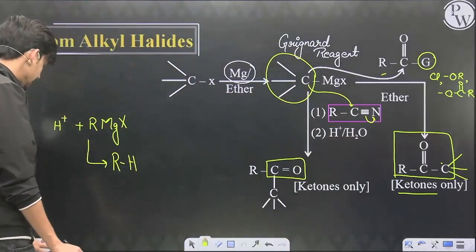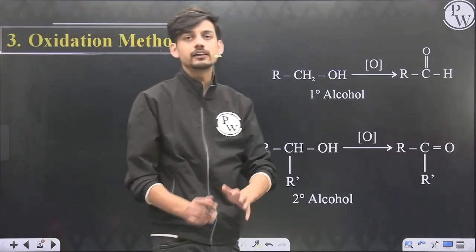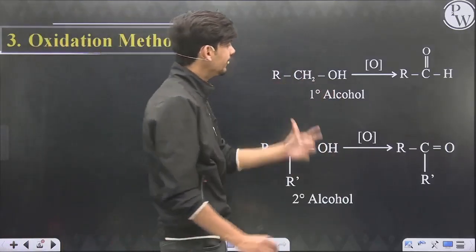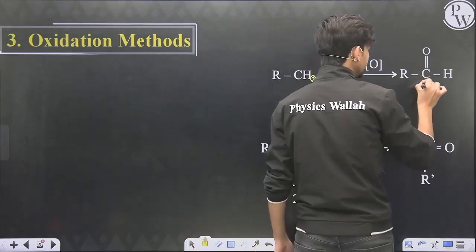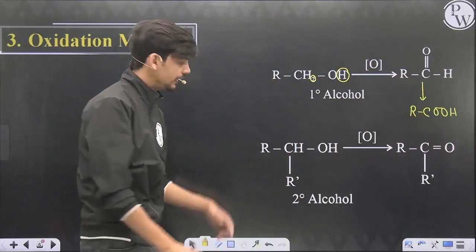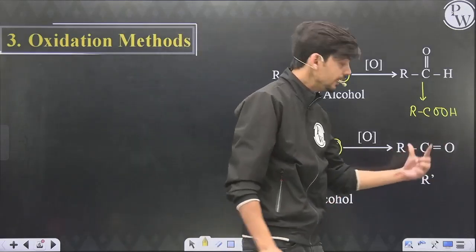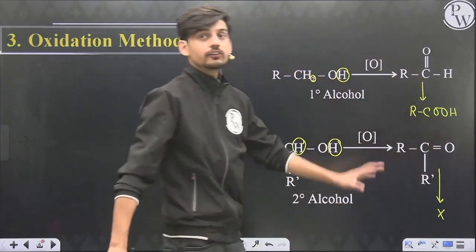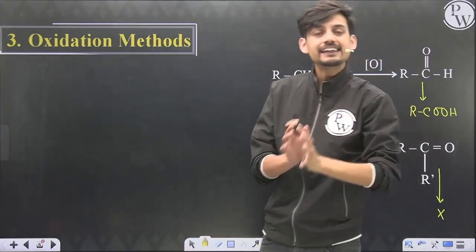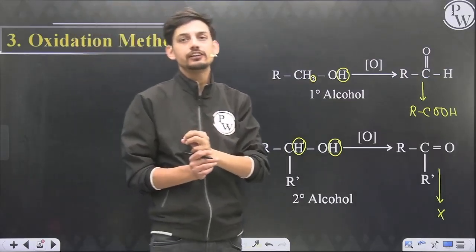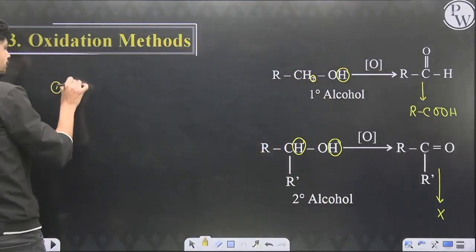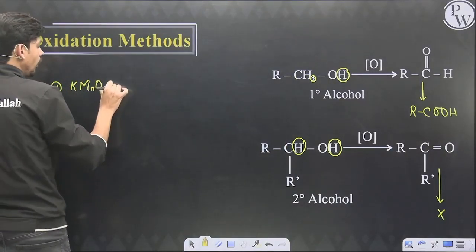So Grignard reagent is mainly used for preparation of ketones using carboxylic acid derivatives or alkyl cyanide. The next method is the oxidation method. Oxidation of a primary alcohol — it loses two hydrogens and converts into aldehyde, which on further oxidation gives carboxylic acid. A secondary alcohol loses two hydrogens and converts into ketone, and ketone cannot be oxidized further. So aldehyde is an intermediate product, and we must be selective about the oxidizing agent.